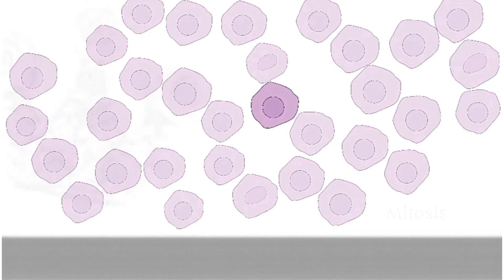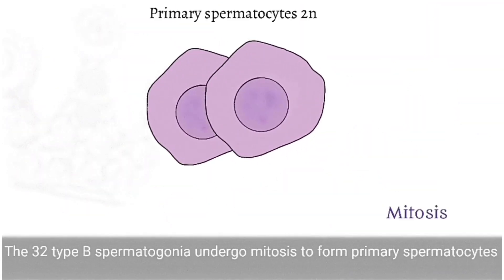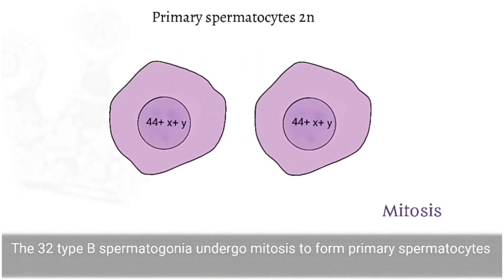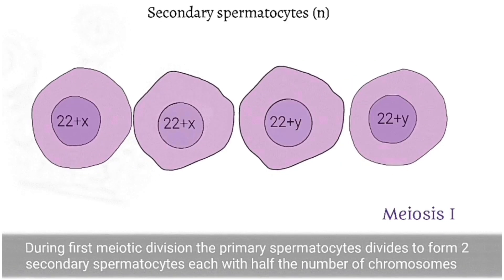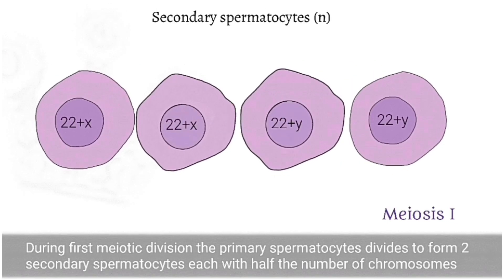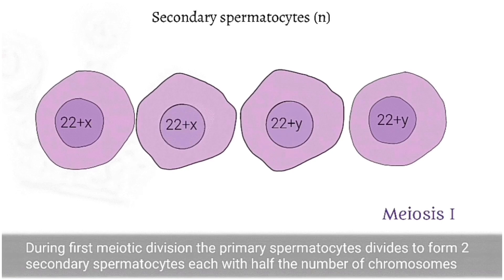It is these type B spermatogonia which then divide to form the primary spermatocytes. Primary spermatocytes have 44 plus XY chromosomes, hence they are 2N. These primary spermatocytes, after a prolonged prophase of 22 days followed by a rapid completion of meiosis 1, form the secondary spermatocytes. Each of these has half the number of chromosomes, so they are N, with 22 plus X or Y chromosomes.